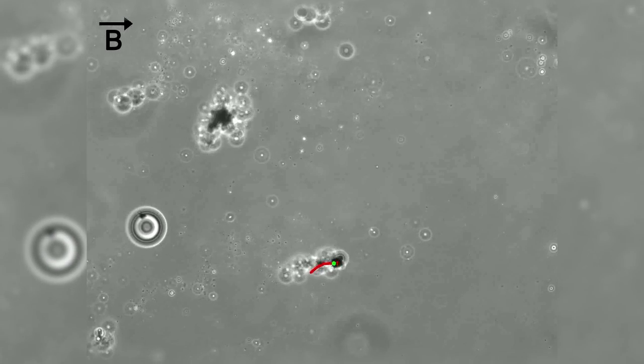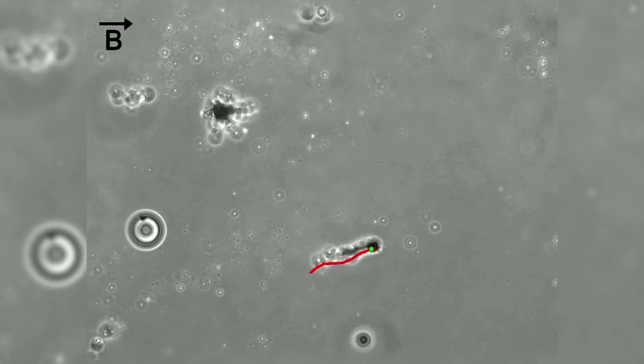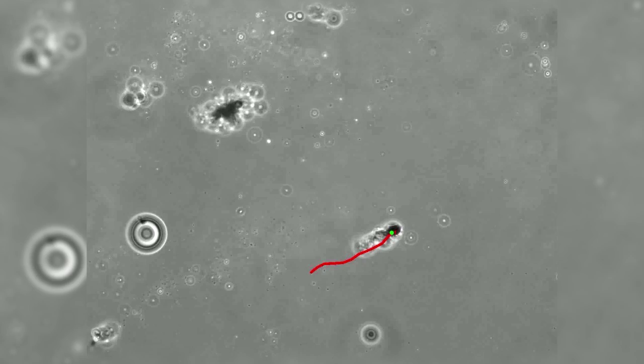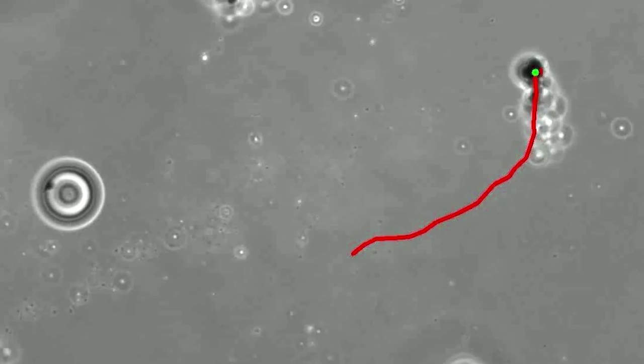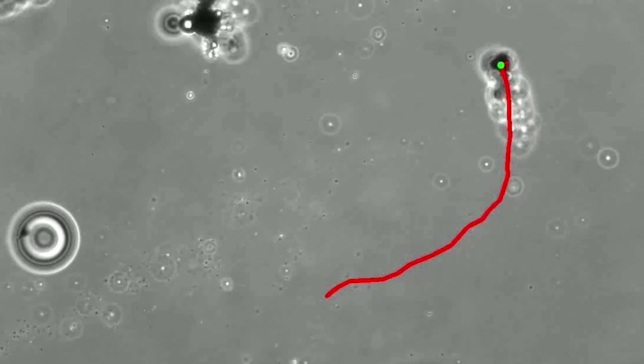One day, the tiny robot you see here could help clean up contaminated water by gathering and destroying disease-causing bacteria in its path. And, rather than staying behind in the water like conventional disinfectants, it can be removed easily with a magnet.